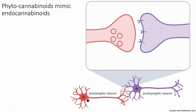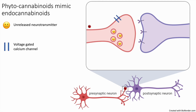Before I talk about how THC affects neurons, I will first describe the endocannabinoid system. When a neuron receives an excitatory signal from another neuron, its membrane becomes more positively charged. This charge moves along the membrane towards the axon terminal. In the axon terminal, there are neurotransmitters that are stored in vesicles waiting for a signal to be released. This signal comes from voltage-gated calcium channels, which are normally closed but will open when the membrane is more positively charged.